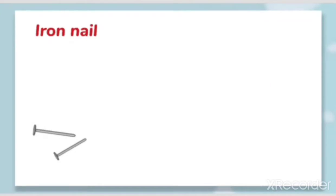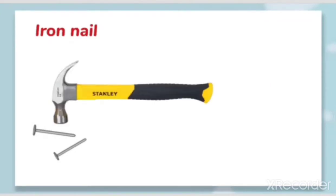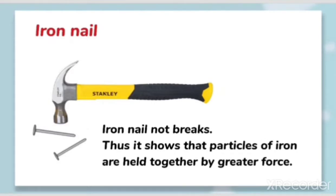First we will take the iron nail and hammer it. What we can observe is that the iron nail does not break — even though it can get flattened, it does not break. Even after hammering for a long time, it will not break. This shows that the particles of iron are held together by a greater force.